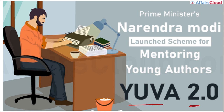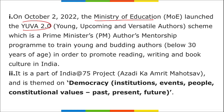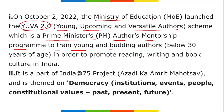First news: YuVA 2.0 — Young, Upcoming and Versatile Authors 2.0. This is Prime Minister Narendra Modi's author mentorship program launched by the Ministry of Education to train young and budding authors below the age of 30, aiming to promote reading, writing, and book culture in India.